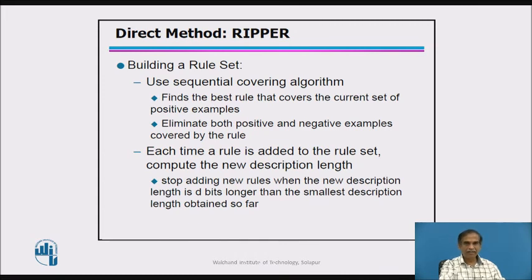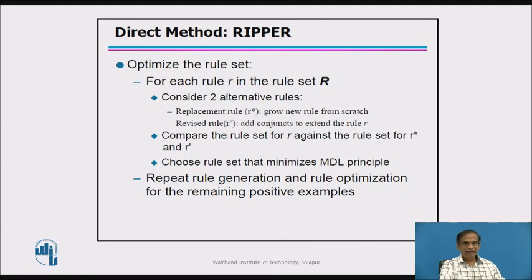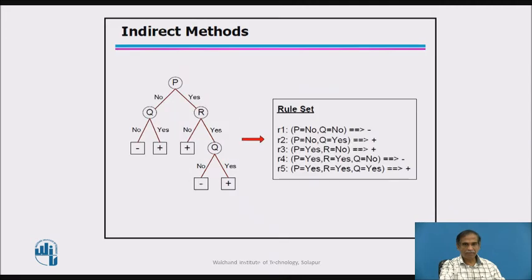Use a sequential covering algorithm that finds the best rules covering the current set of positive examples. Each time a rule is added to the rule set, compute a new description length. Optimize the rule set using rules that minimize the MDL (Minimum Description Length) principle. Repeat rule generation and optimization for remaining positive examples.